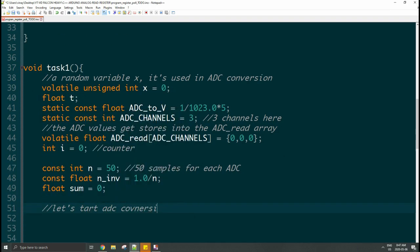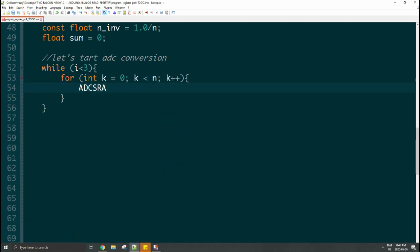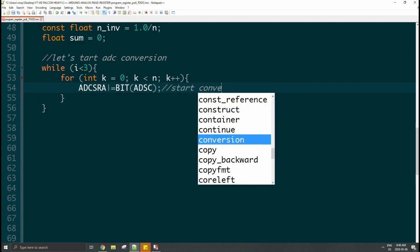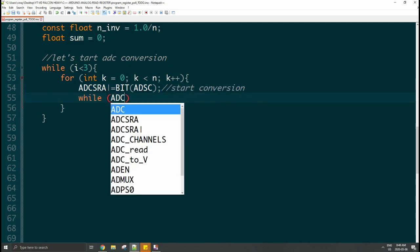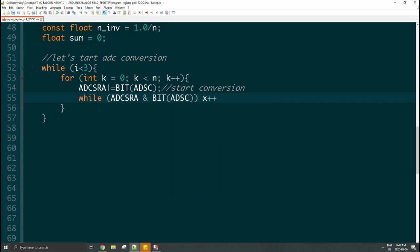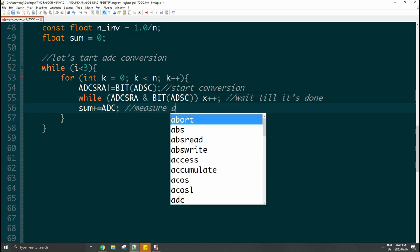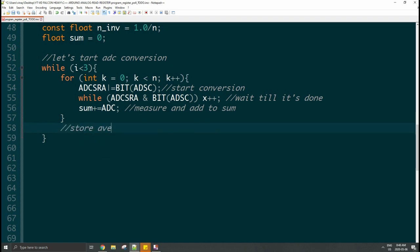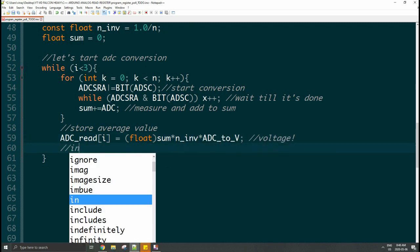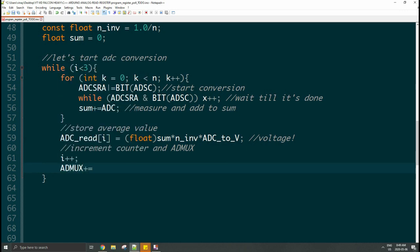Now let's start the conversion. Go inside the while loop. K is simply for each sample, so you have to increment that and then add the value to the sum. First of all, you reactivate the ADC. Then, while that is still converting, so while that bit value is equal to 1, you just add the values to the sum. Lastly, you store the average value. It's quite straightforward. You just divide sum by N and then multiply it to get the voltage. Then you just increment the counter and the ADMUX value, so it'll go from 65 to 67 to 69.